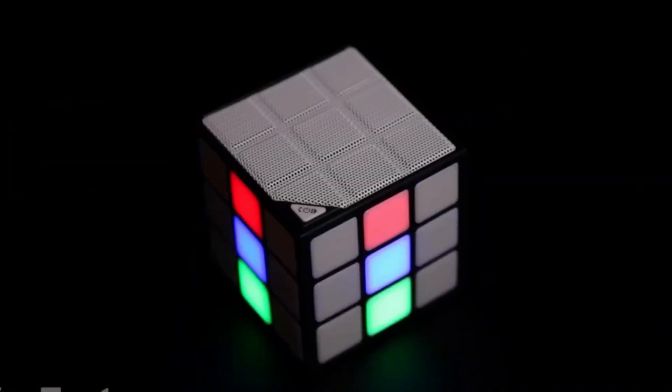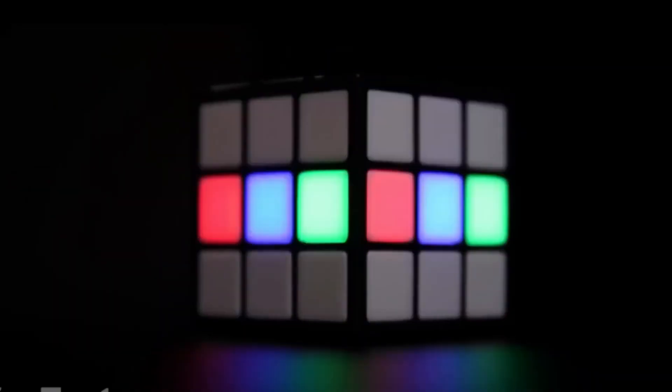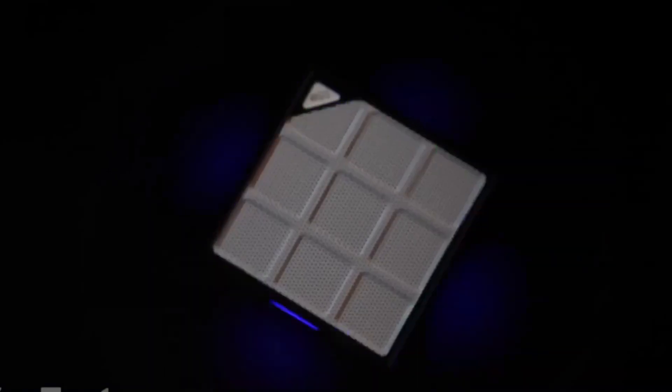This is the first Rubik's cube that doesn't need to be solved. It plays music instead. Yep, this is actually a fully functional Bluetooth speaker. The cubes are equipped with LED lights that add some bright colors to your listening experience. There are five color-changing modes, including lights that flash to the rhythm of your favorite song.